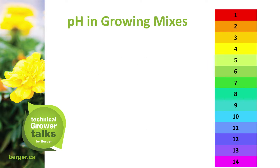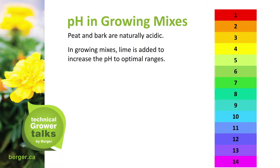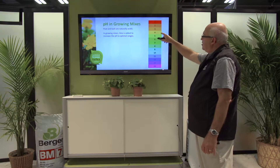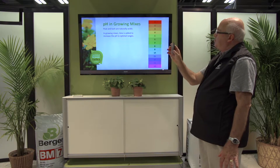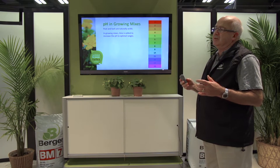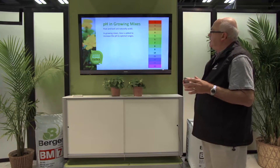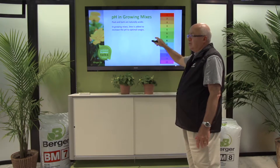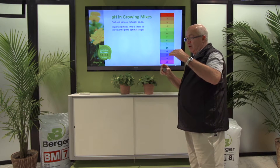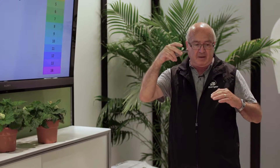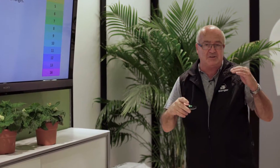pH in growing mixes — peat and bark are naturally acidic. In growing mixes, lime is added to increase the pH to optimum ranges. The bark itself, prior to decomposition, is alkaline or higher pH, but after composting it is definitely acidic. So we adjust the bark prior to putting it into the mix, because we don't want the components of peat and bark reacting against each other.